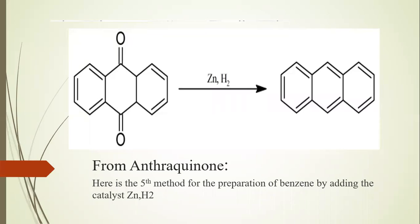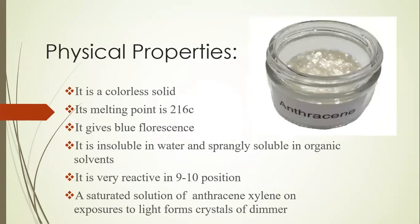The last and most important method is the preparation of Anthracene from Anthraquinone. Anthraquinone is heated in the presence of catalyst zinc and hydrogen (H2), and Anthracene is obtained, as you can see on screen. Those were the preparatory methods for the formation of Anthracene.